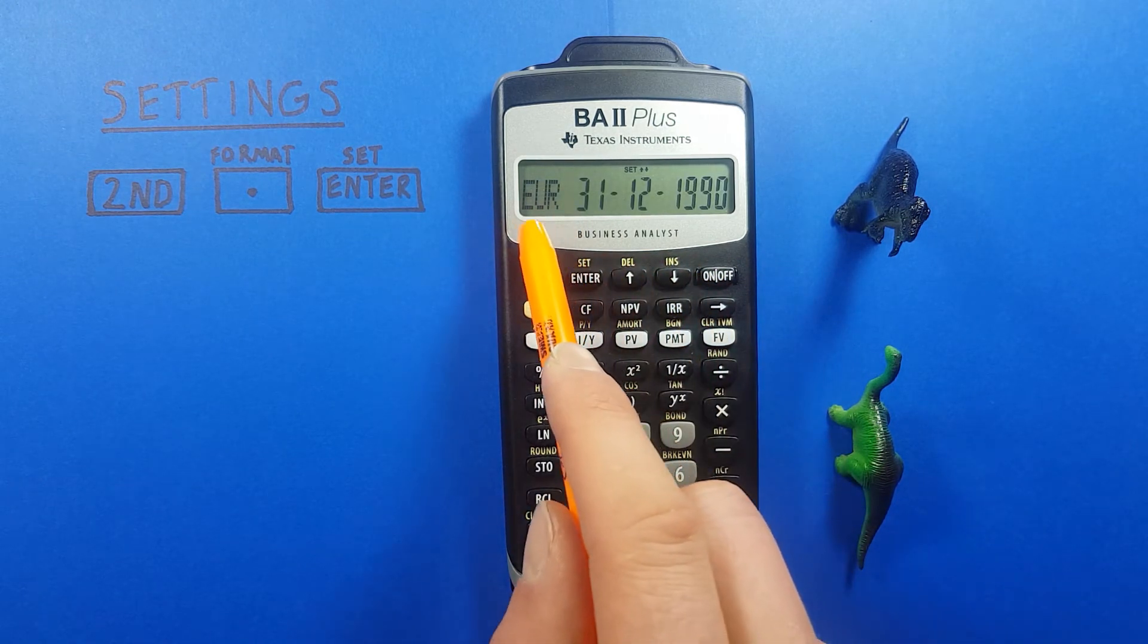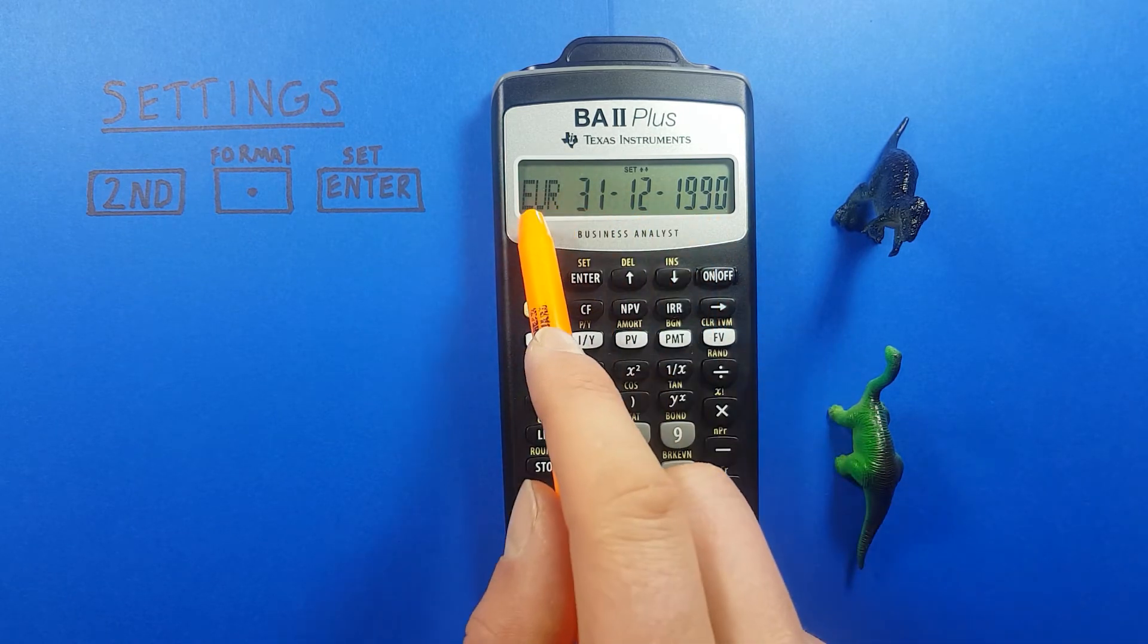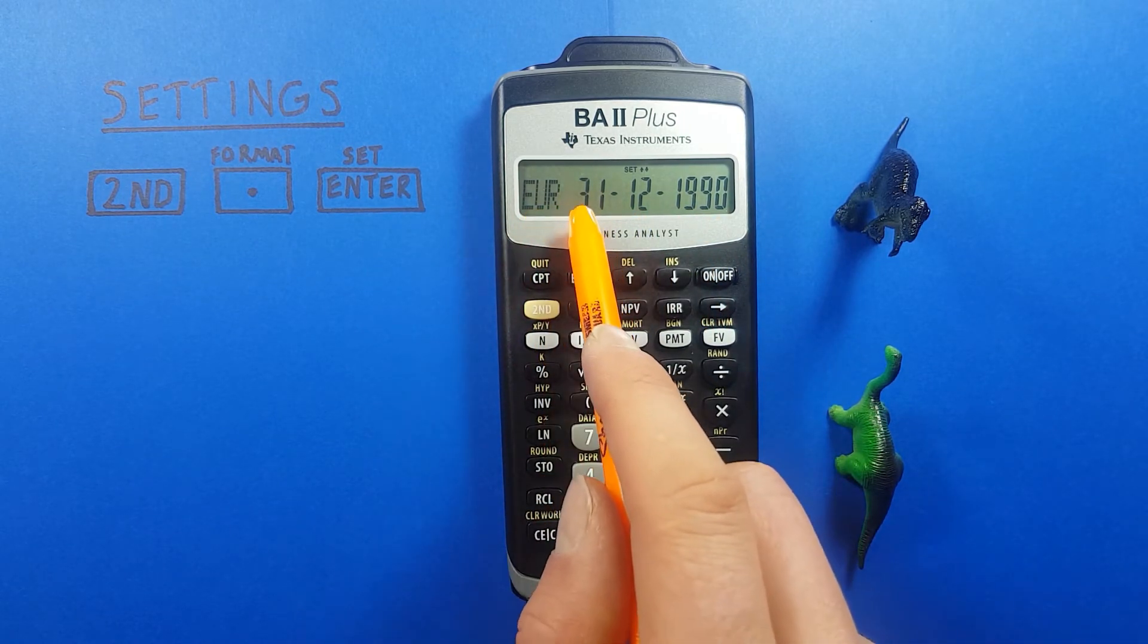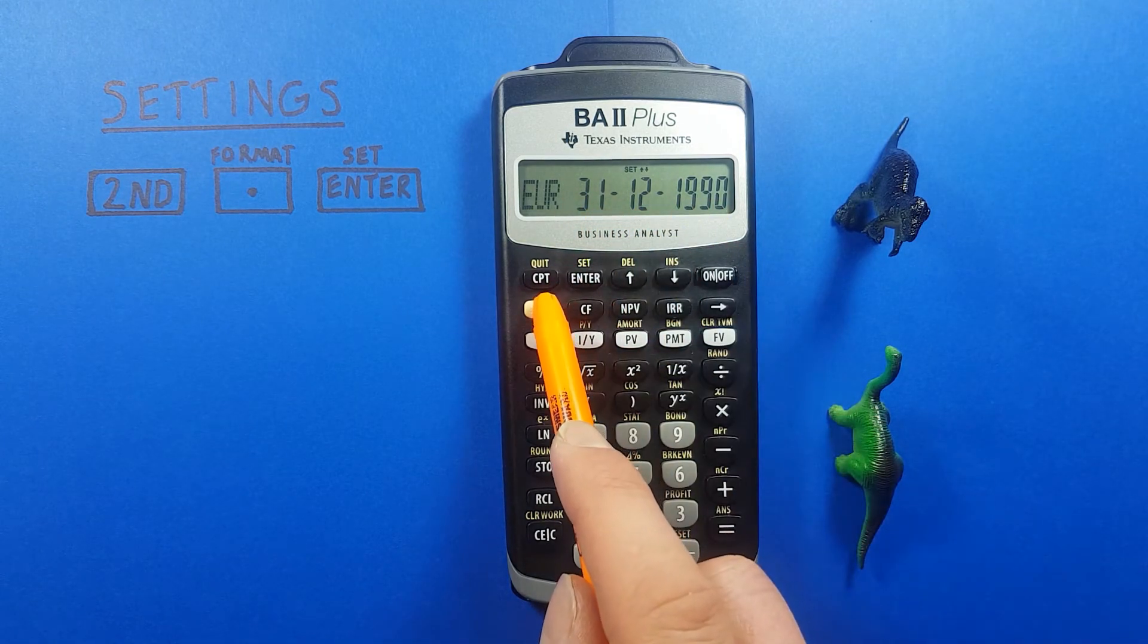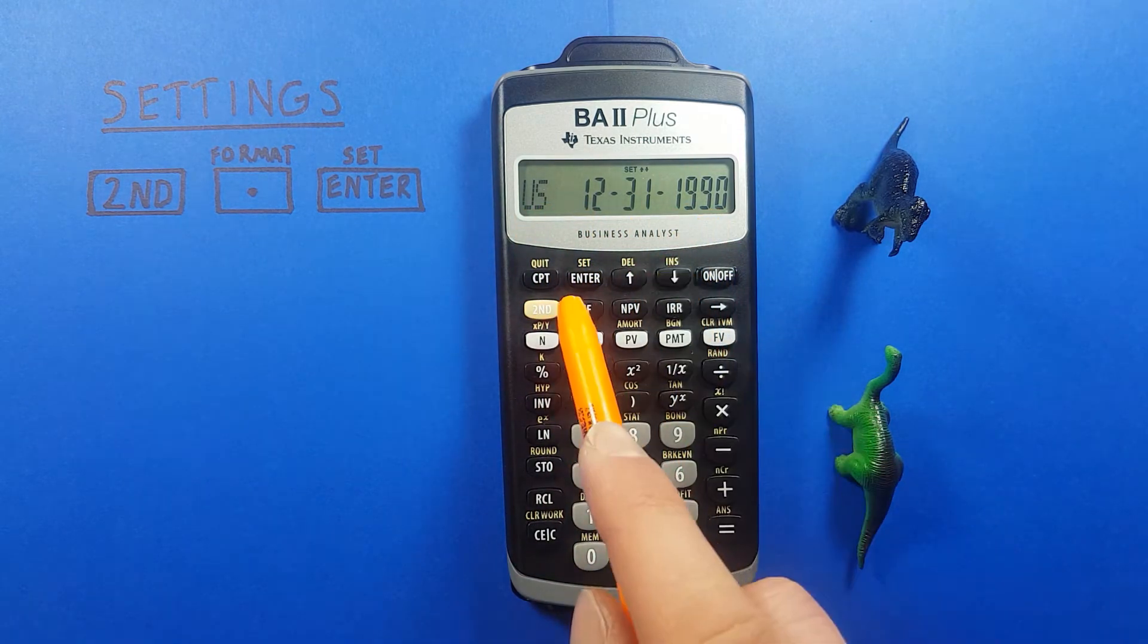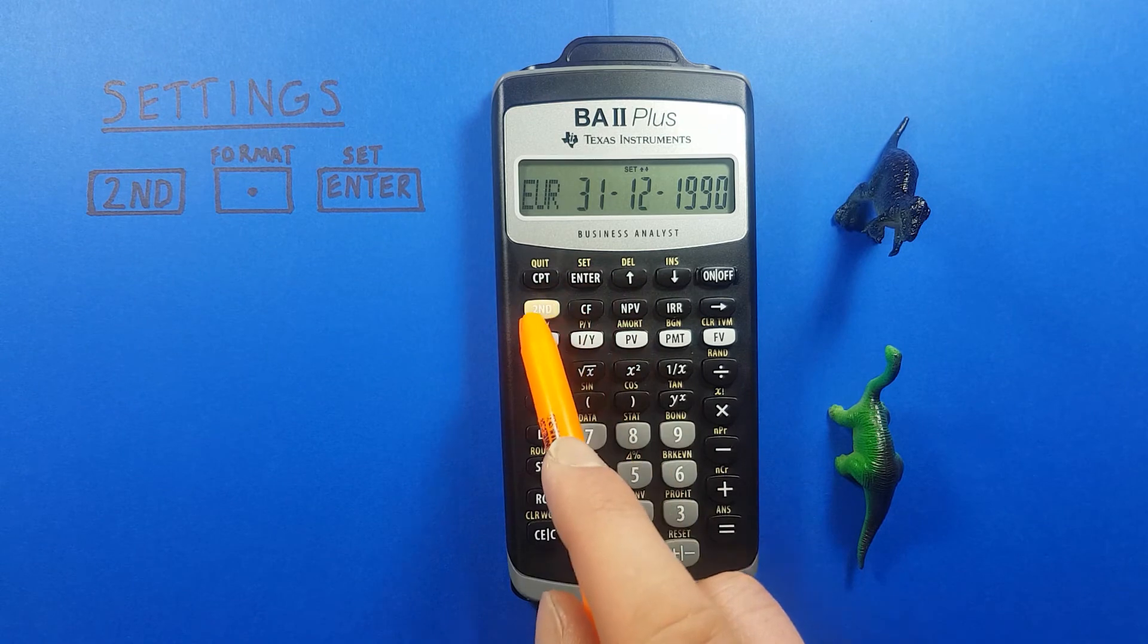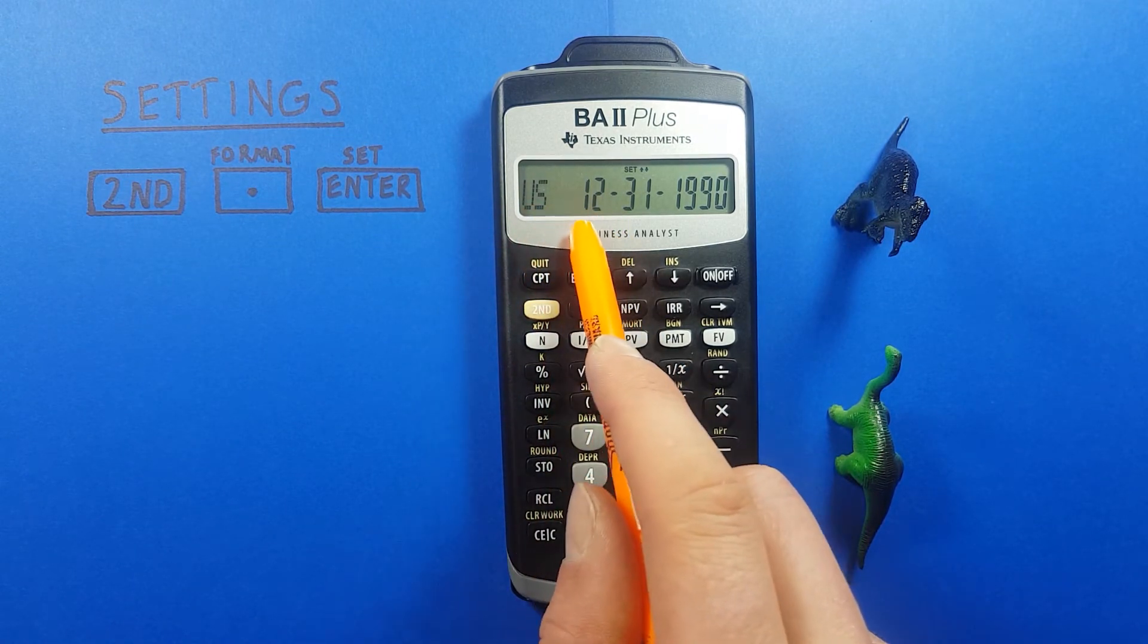If you go down 1 again you get this which is our date option. Right now it's set to European date which is days months years but if we want to change that to the American standard which is months days years we use the second enter key to change back and forth. So we'll leave it set to the US version right now.